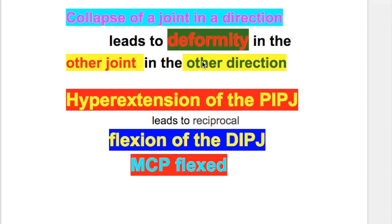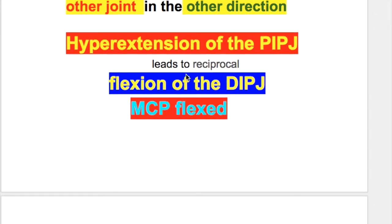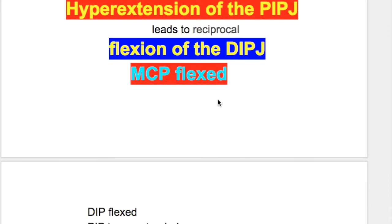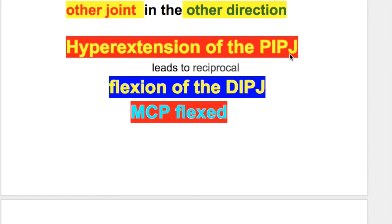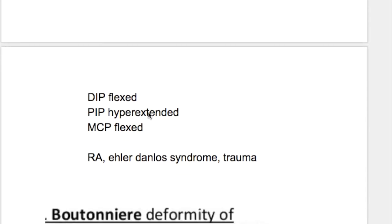In swan neck deformity, there is hyperextension of the proximal interphalangeal joint, which leads to reciprocal flexion of the distal interphalangeal joint and also flexion of the metacarpophalangeal joint. So the joints that are flexed are the distal interphalangeal joints and metacarpophalangeal joints, which are before and after the proximal interphalangeal joint that is hyperextended.